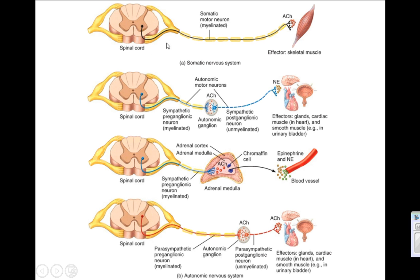If it's sympathetic, the first neuron is going to be short and the second is going to be long. If it's parasympathetic, it's going to be long then short — long pre, short post.